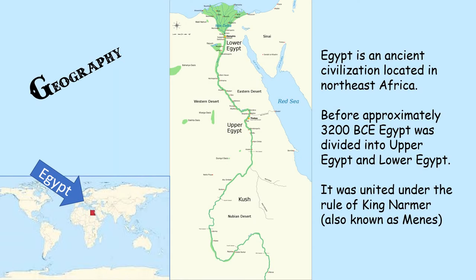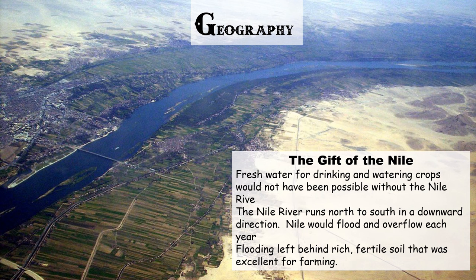Starting with geography — geography is the study of land, water, climate, and how people interact with the earth. Where is Egypt? If you look in the lower left hand corner there is a world map and Egypt is shaded in red. It's in northeastern Africa, about the size of Texas in the United States. It was divided before 3200 BCE into what was called Upper Egypt and Lower Egypt. The confusing part is that Upper Egypt was actually south of Lower Egypt, as you can see on the map.